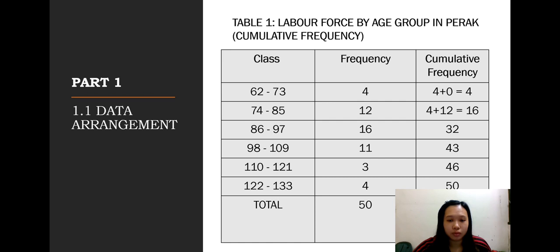This is the table for cumulative frequency. The cumulative frequency for first class is 4, the second class is 16, the third class is 32, then is 43, next is 46, and last is 50.